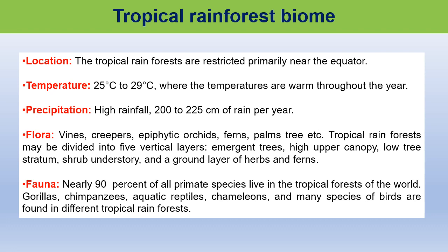Tropical rainforest biomes. These biomes are primarily restricted mostly along the equatorial belt, having low variability in annual temperature, combined with high levels of rainfall ranging from 200 to 225 cm per year. Tropical rainforest biomes are discontinuous patches of semi-evergreen and evergreen forest, and the largest traces can be found in the Amazon and Congo basin. This biome is enriched with different kinds of flora and fauna. As far as flora is concerned, vines, creepers, epiphytic orchids, ferns, plum trees, etc. are found in the rainforest biomes.